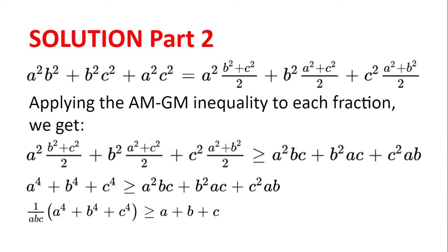Now we can rewrite A²B² plus B²C² plus A²C² as A squared multiplied by B squared plus C squared divided by 2, plus B squared multiplied by A squared plus C squared divided by 2, plus C squared multiplied by A squared plus B squared divided by 2. Applying the AM-GM inequality to each fraction, we get that this is greater than or equal to A²BC plus B²AC plus C²AB, with equality when A equals B equals C.